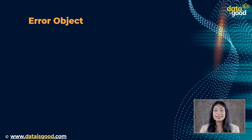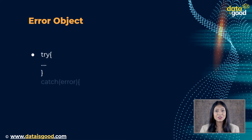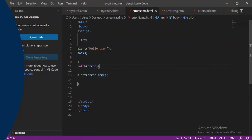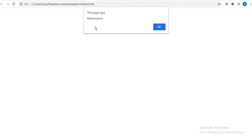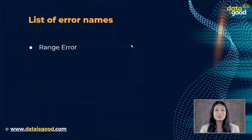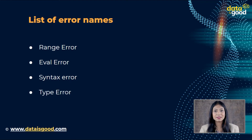When the try code has any errors, an object containing the error information is generated and passed to catch as an argument. The error object has three properties: name, message, and stack. The name property has the name of the error — for example, the error for an undefined variable is a ReferenceError. Other error types include: RangeError (when you use a number outside a given range), EvalError (error in the eval function), SyntaxError, TypeError, and URIError (an error in encodeURI).